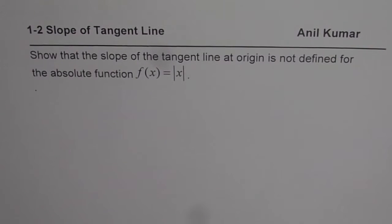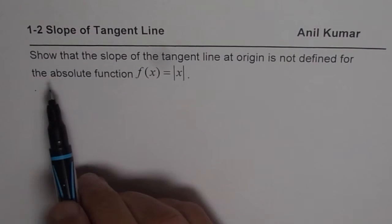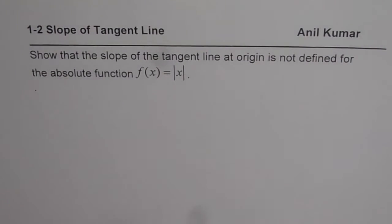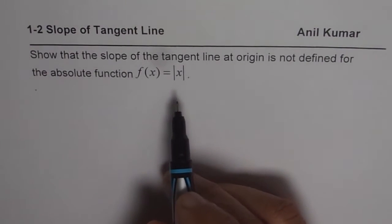I am Anil Kumar and in this video we will discuss the slope of the tangent line for the absolute function. The question here is: show that the slope of the tangent line at the origin is not defined for the absolute function f(x) = |x|.